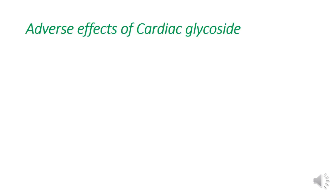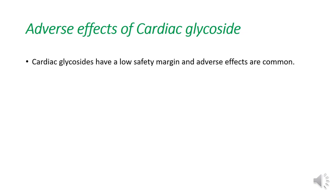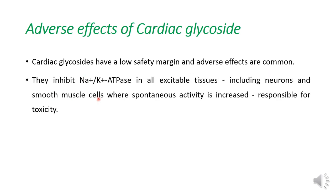Now we will see the adverse effects of cardiac glycoside. Cardiac glycosides have a low safety margin and adverse effects are common. They inhibit the sodium-potassium ATPase pump in all excitable tissue, including neurons and smooth muscle cells, where spontaneous activity is increased — this is responsible for the toxicity. This is why toxicity of cardiac glycoside is very common.